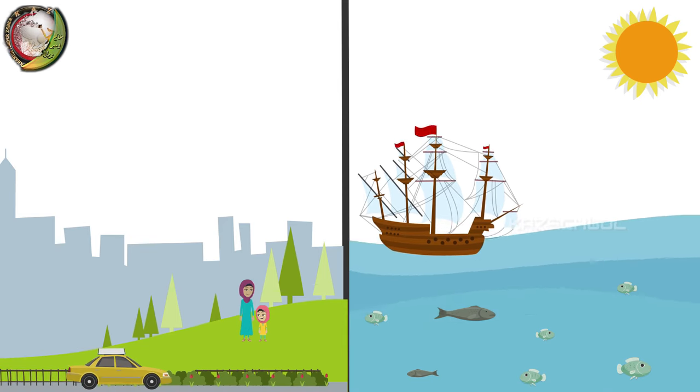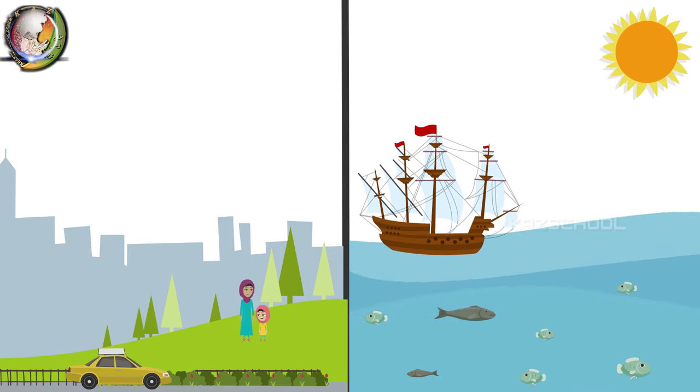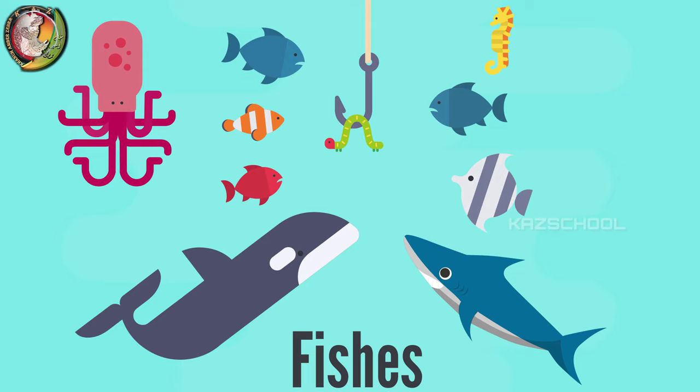Allah made the large oceans and the big seas, which covered the earth with water and formed into deep lakes and long rivers. Allah made the sea monsters and all the fishes big and small.